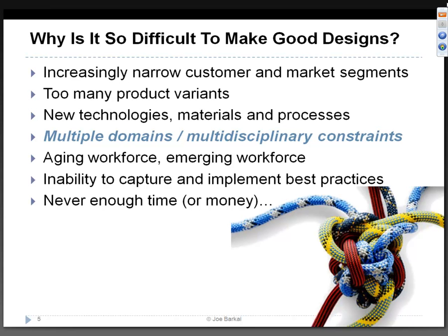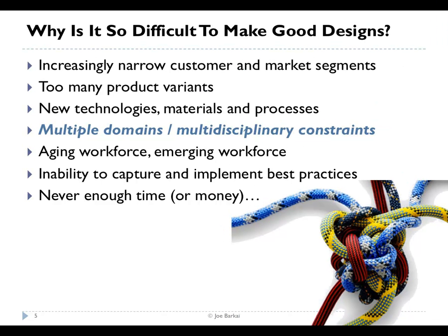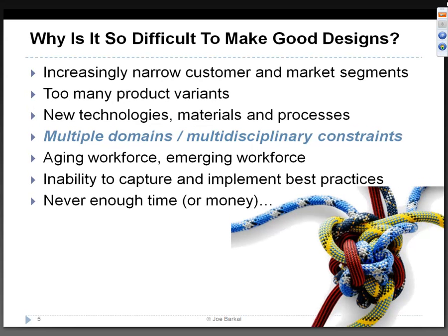It's worthwhile thinking a little differently about why it's so difficult to make good design decisions. We all face, in all industries, increasingly narrowing segments of customers and end markets. We need to build products tailored to more specific customer sectors - whether by geography or by demographic. As a result, we see many, many product variants. In some industries, products are low volume with many variants each, which makes it very difficult to control the design, manufacturing, and quality.